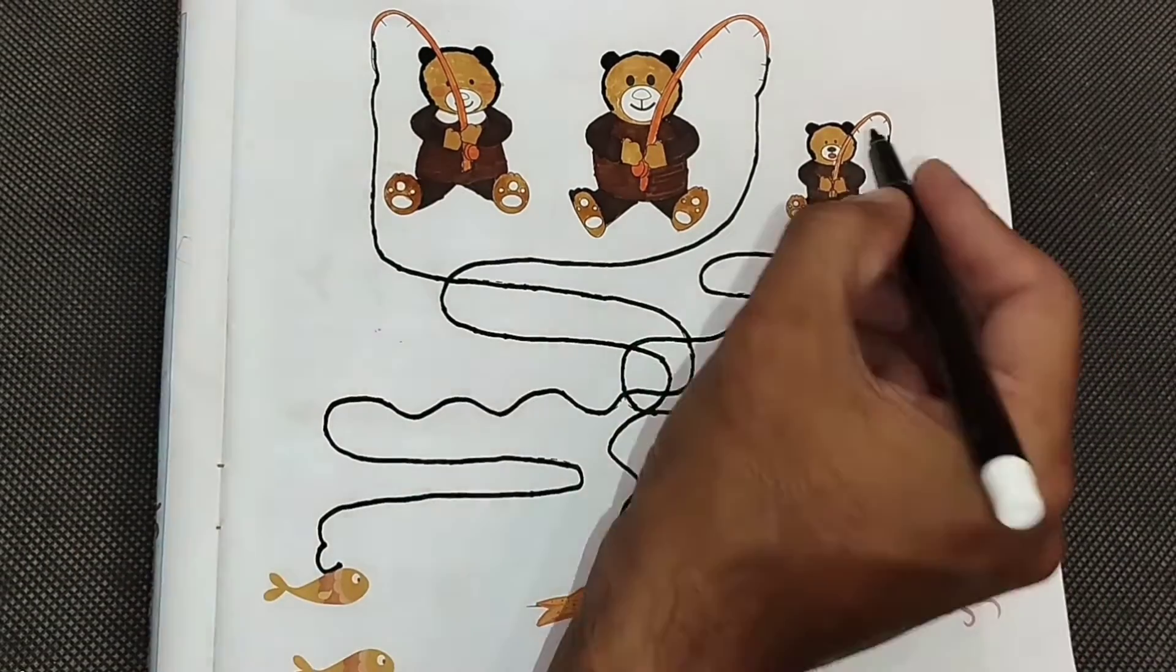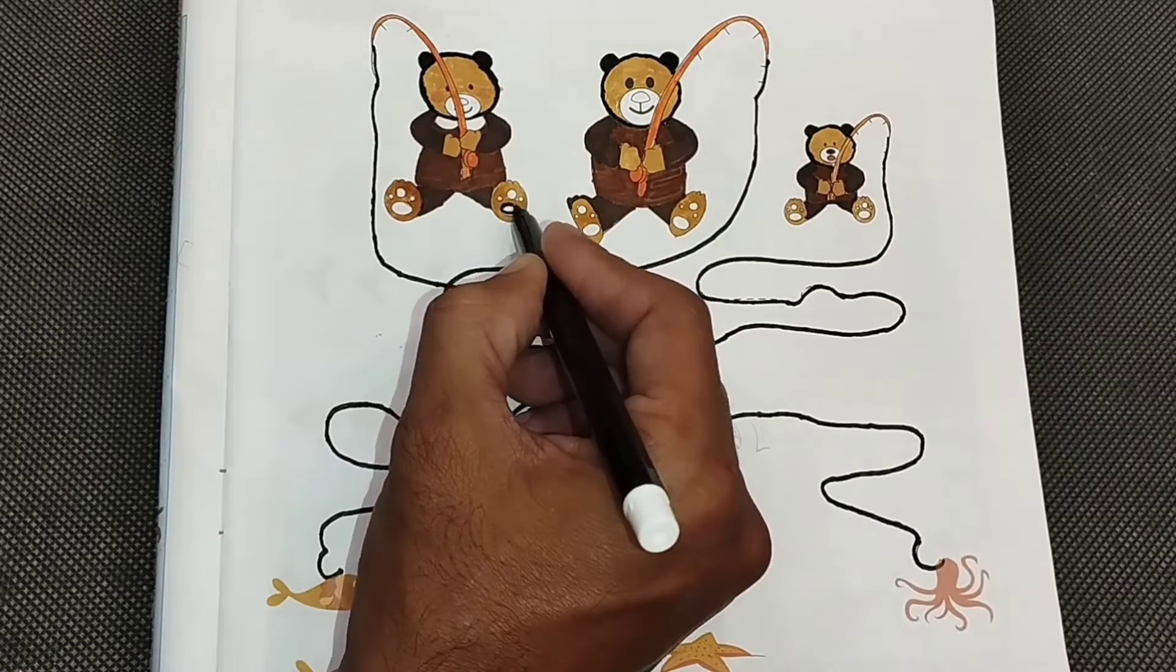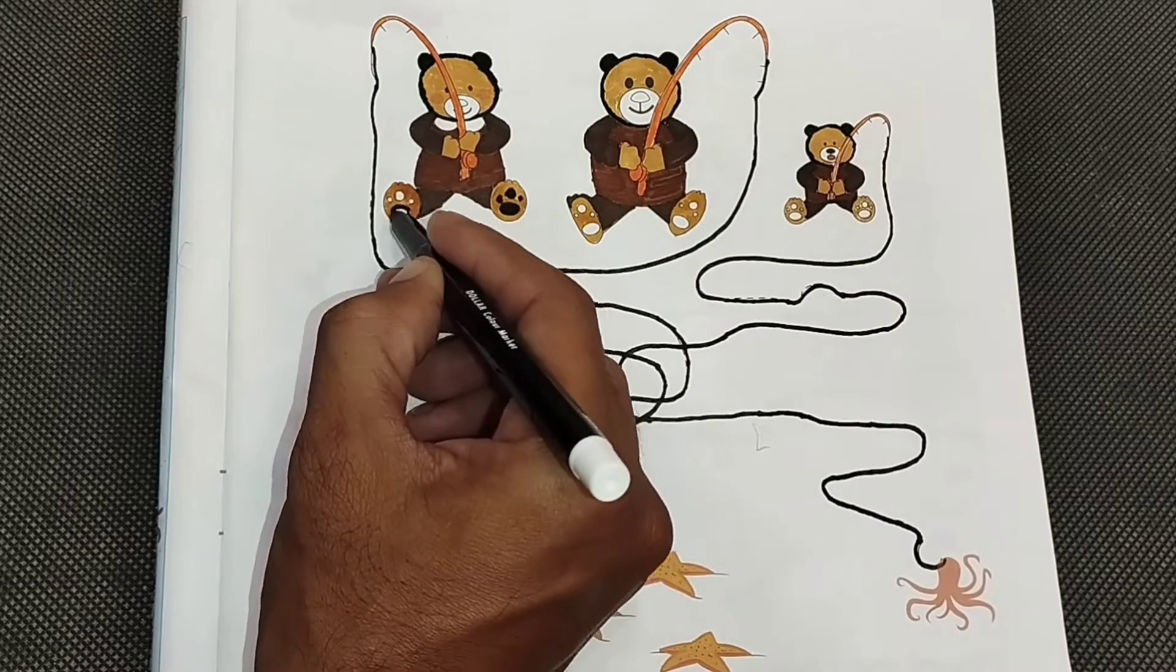Y is for Yellow, Y-Y-Yellow. Z is for Zoo, Z-Z-Zoo.